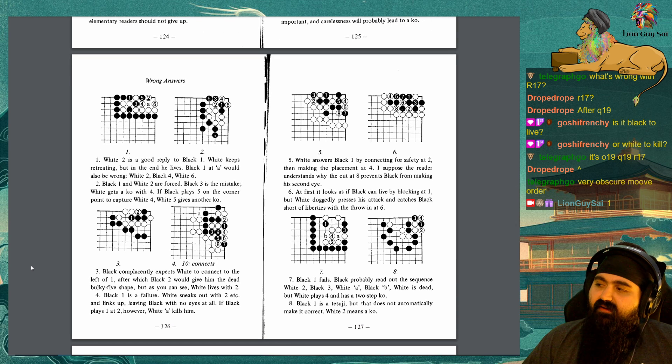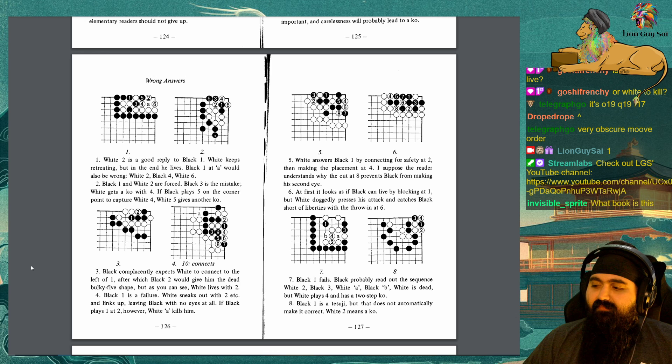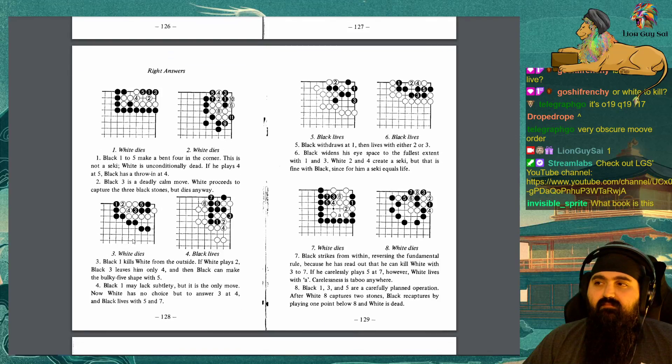5. White answers Black 1 by connecting for safety at 2, then making the placement at 4. I suppose the reader understands why the cut at 8 prevents Black from making a second eye. 6. At first it looks as if Black can live by blocking at 1, but White doggedly presses his attack and catches Black short of liberties with the throw-in at 6. 7. Black 1 fails. Black probably read out the sequence, White 2, Black 3, White A, Black B, White is dead. But White plays 4 and has a 2-step ko. 8. Black 1 is a tesuji. But that does not automatically make it correct. White 2 means ko.